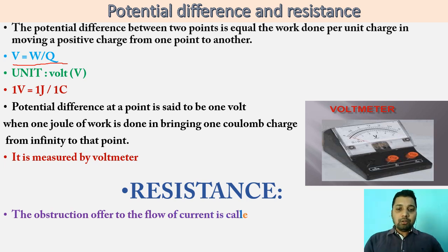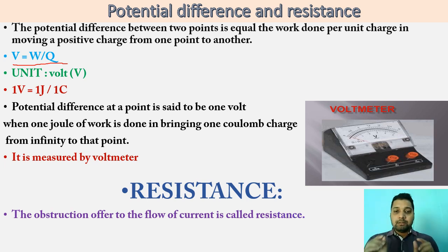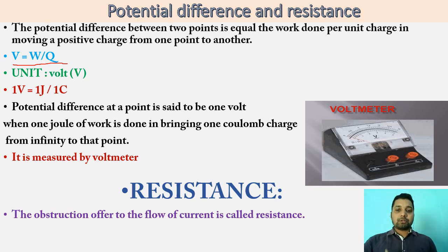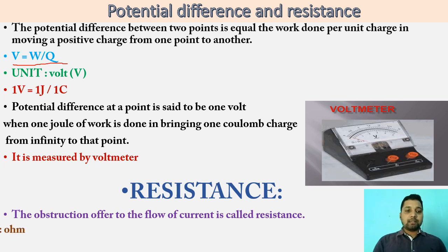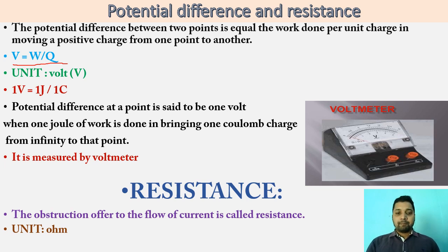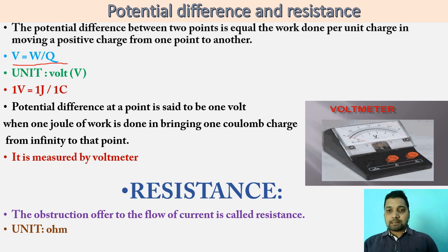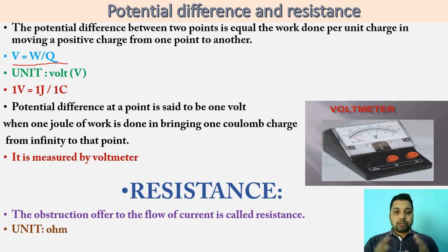Resistance has the SI unit ohm. This unit came from the scientist named George Simon Ohm. He established the relationship between potential difference, resistance, and current, given by his law called Ohm's law. From that, we get the relation R equal to V by I.